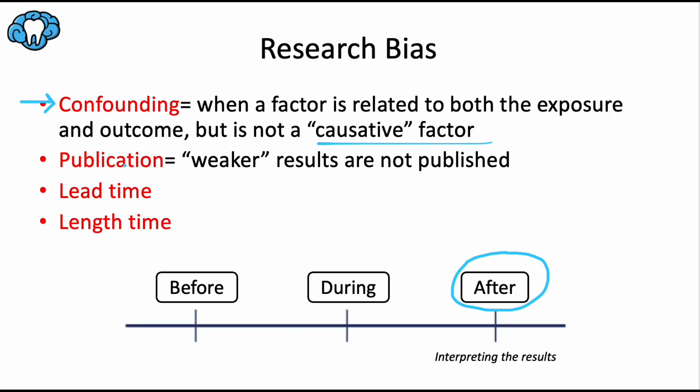Publication bias is defined as the failure to publish results of a study on the basis of the direction or strength of the study findings. Unfortunately, weaker or boring results are less likely to be published in a peer-reviewed journal, even though they may be very important. Some of the most important studies are those that find no correlation or no statistical significance, but those papers are sometimes left out of the publication cycle.